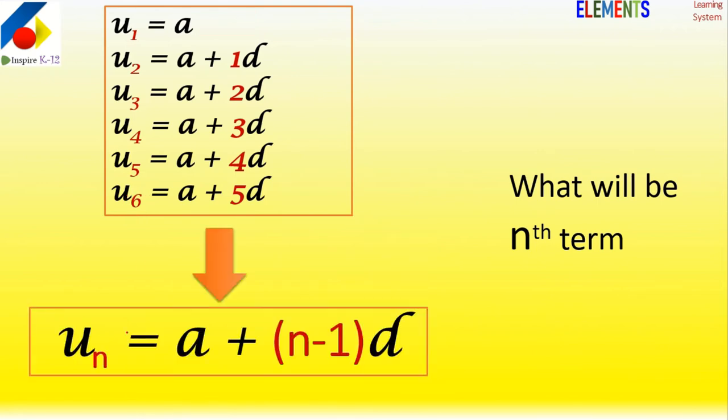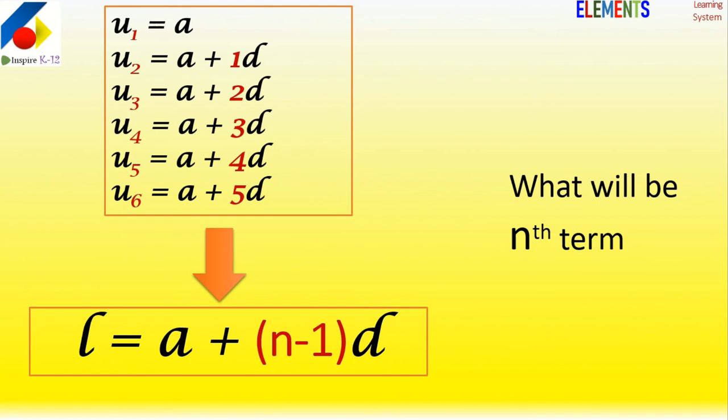We find like this: the nth term is a plus one less than n times the difference. Because of the continuous adding, the first term has no d multiplier. So the nth term is a + (n-1) × d. It's actually very simple.